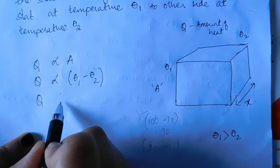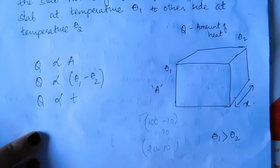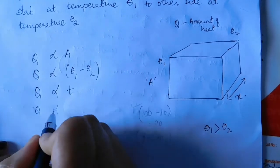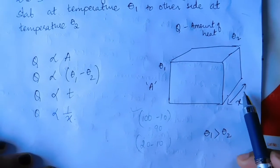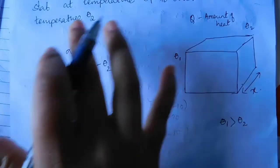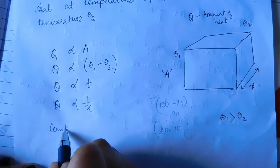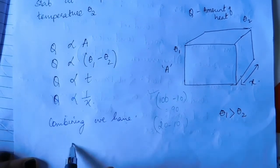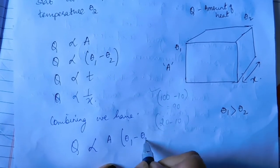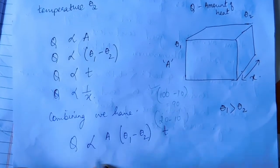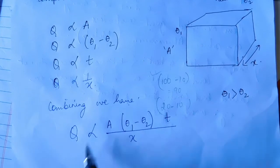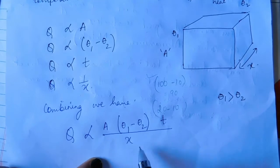Q is also directly proportional to time T, the duration for which heat flows. Q is inversely proportional to the thickness x — more thickness means less heat passes, and less thickness means more heat passes. Combining all of these: Q is directly proportional to A times (θ1 minus θ2) times T, divided by x.